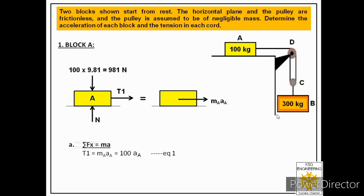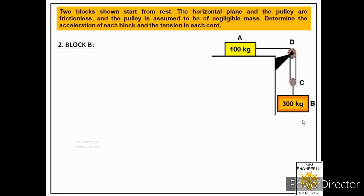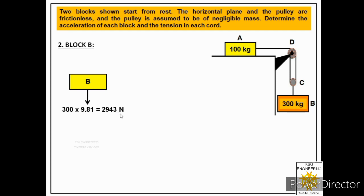Now we draw the free body diagram of block B. We represent the block and label all forces. The first force is the weight: mass is 300 kilograms, so weight = 300 × 9.81 = 2943 newtons, acting downward. Block B is connected to a cable, so the weight is balanced by the tension in that cable, which we label T2.